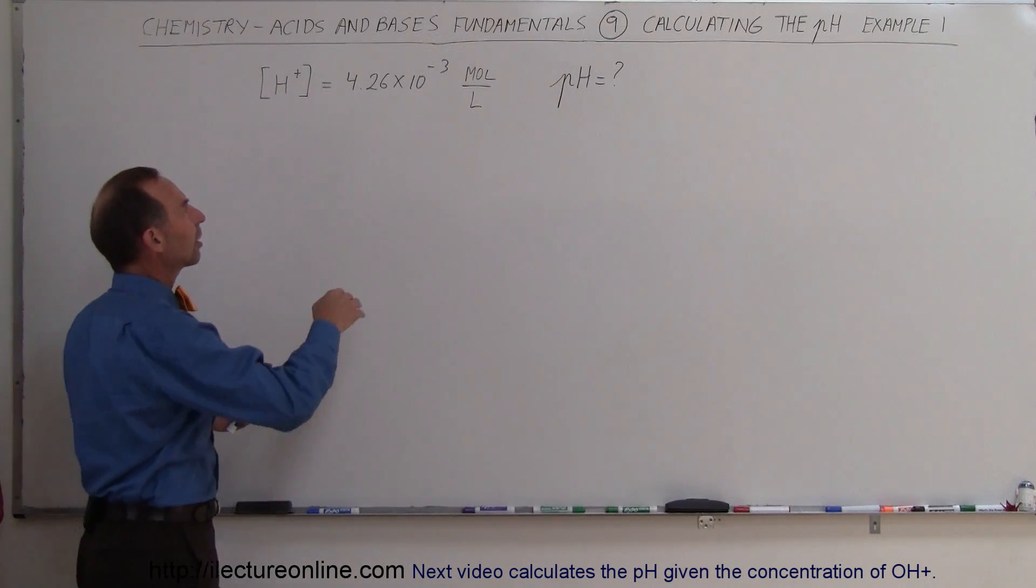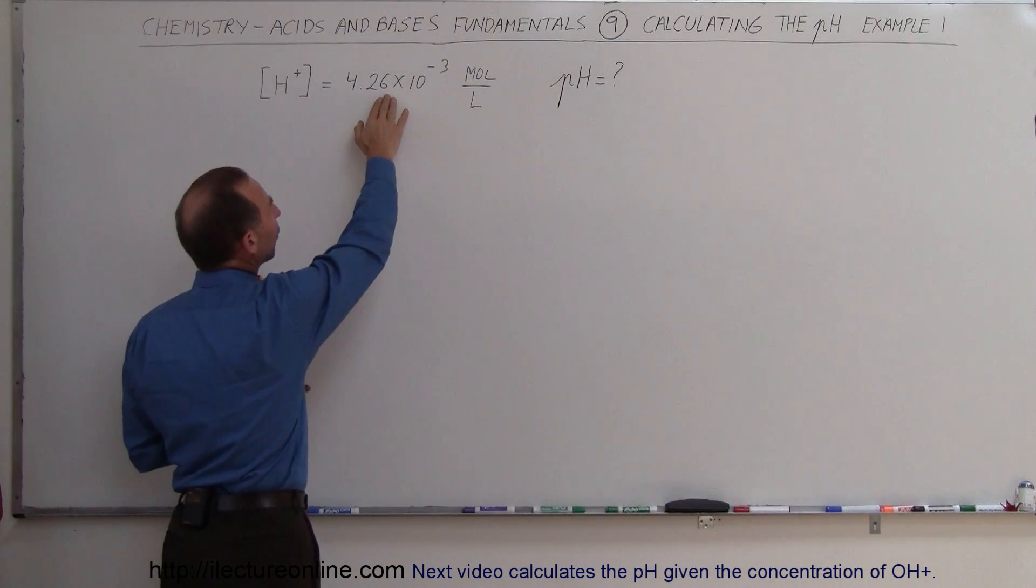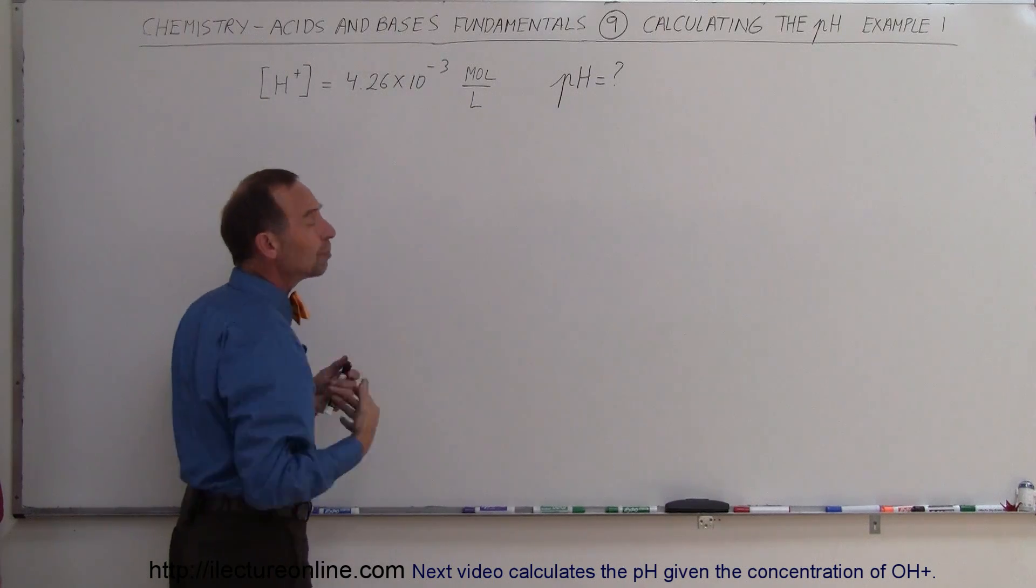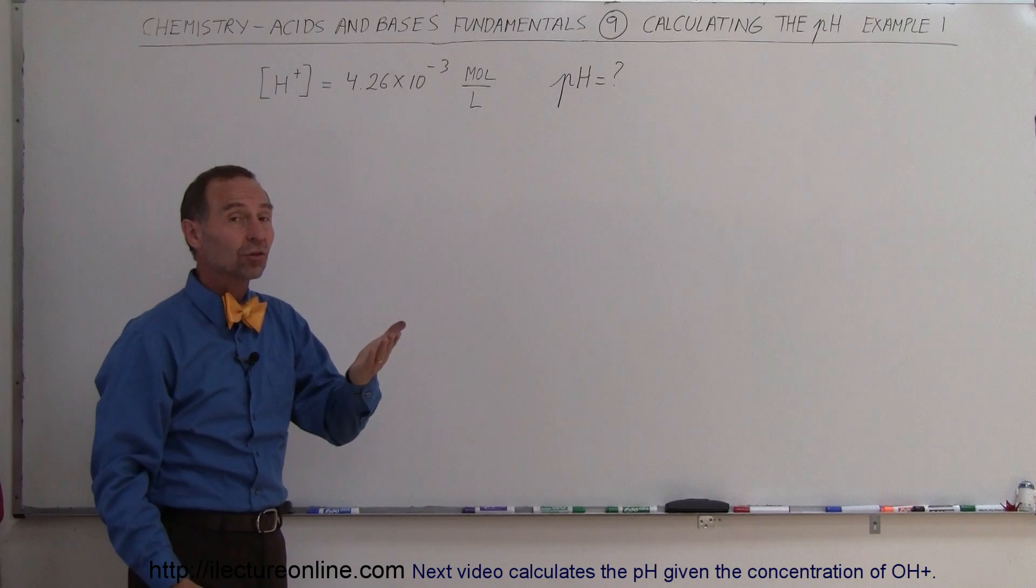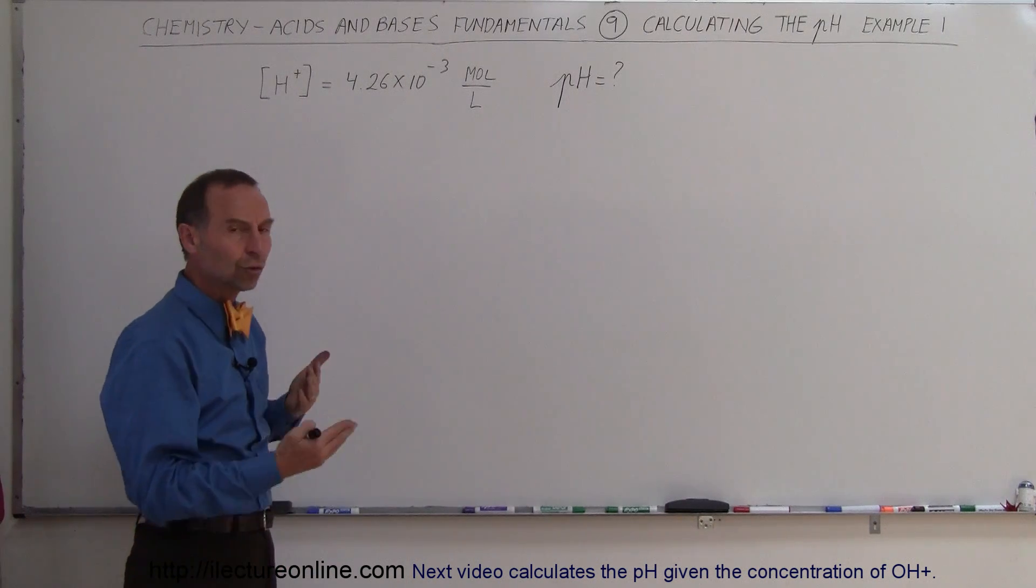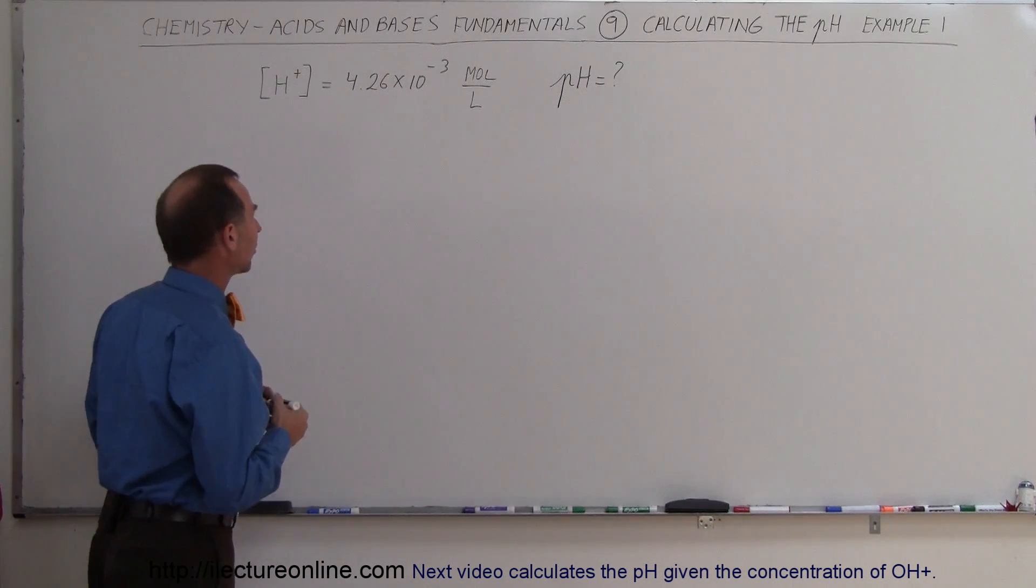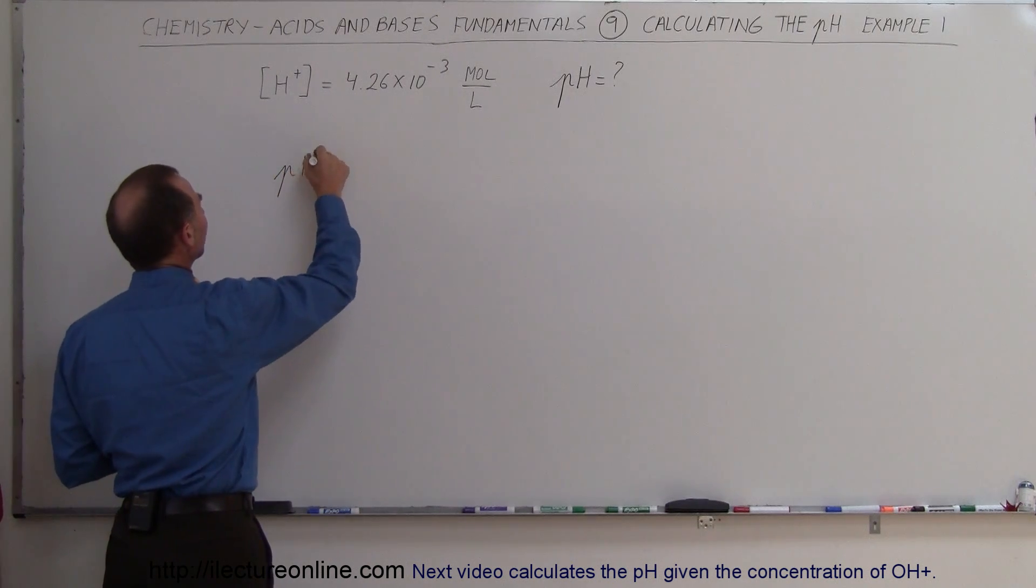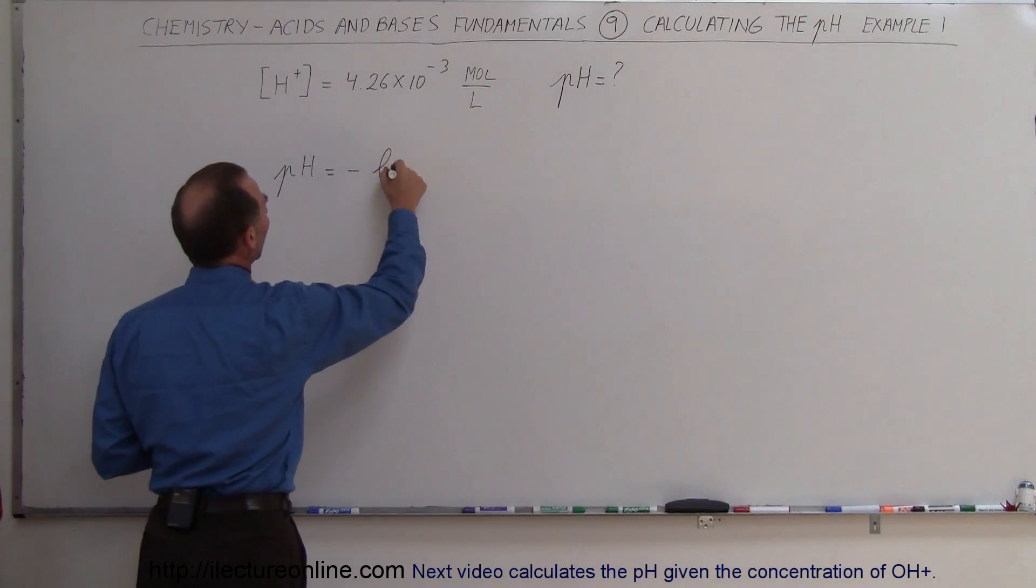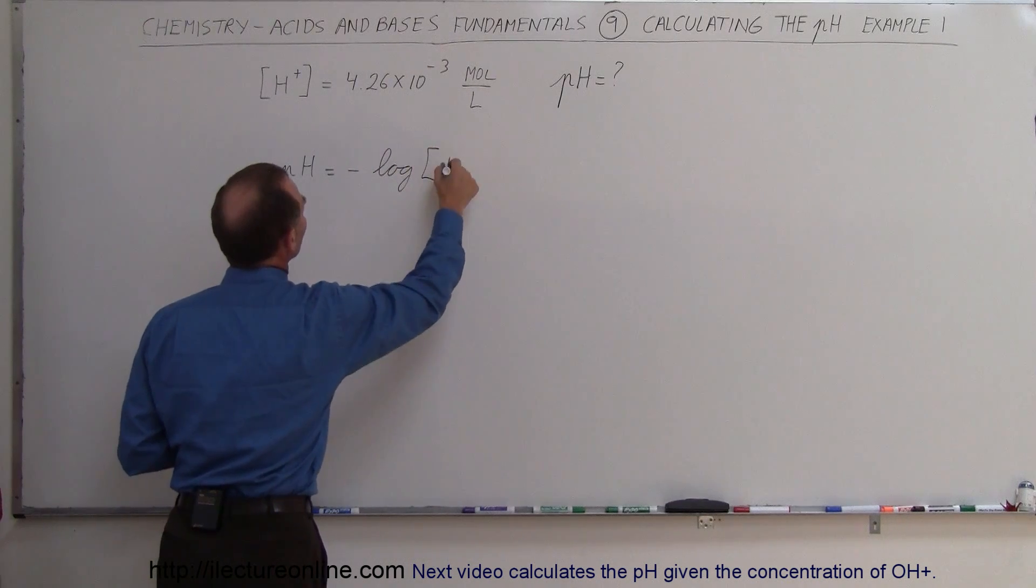First, whenever the concentration is greater than 1 times 10 to the minus 7, it should be acidic. Since 10 to the minus 3 is much greater than 10 to the minus 7, this should be an acidic substance. To find the pH, we use the equation: pH equals the negative log of the hydrogen ion concentration.